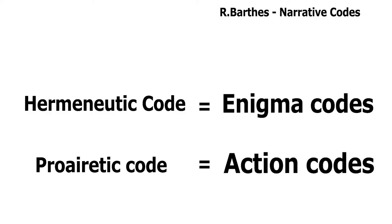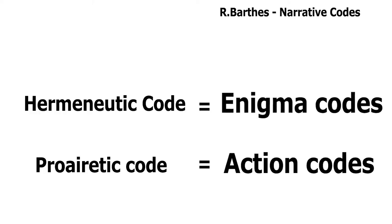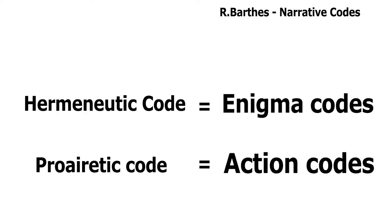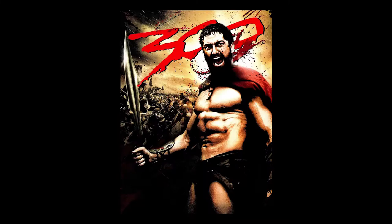Action codes are fairly simple — they're any action that moves the narrative forward. Enigma codes are things that make the audience ask questions. These questions are then slowly revealed throughout the story.